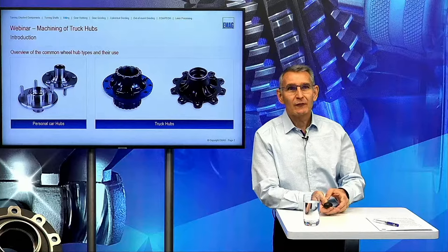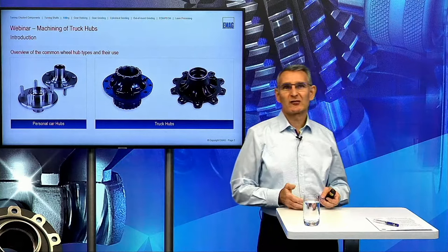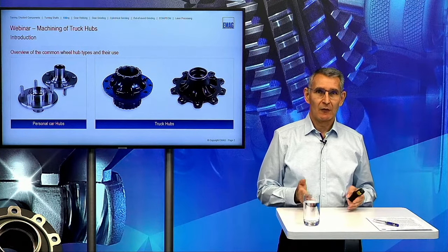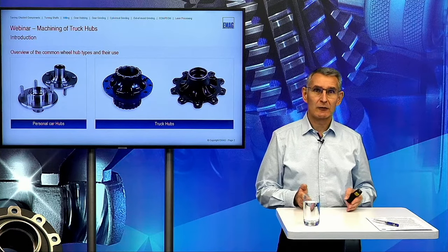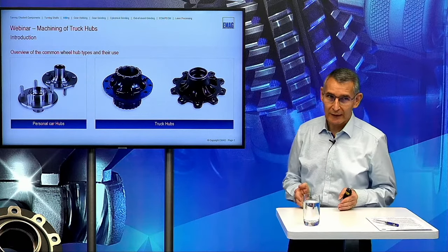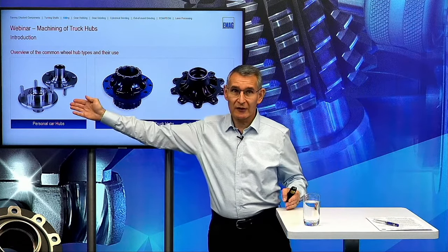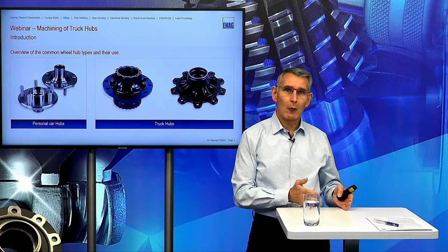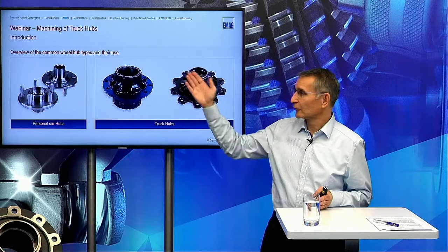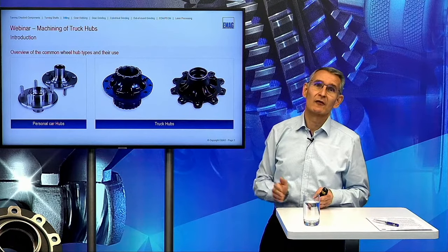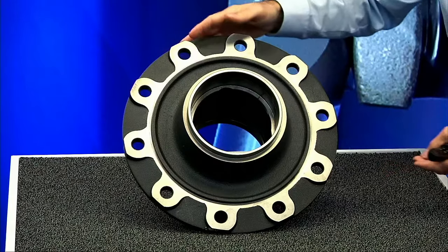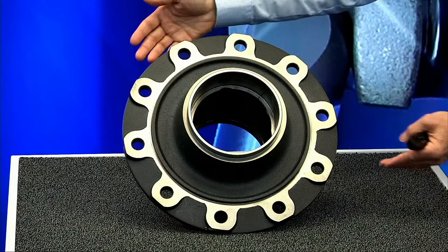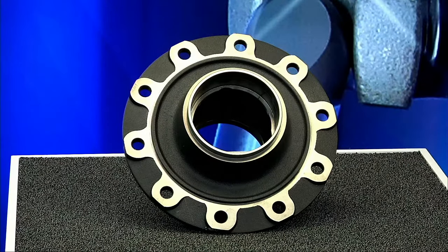Thanks Jan. First of all, I want to give you a short introduction about different types of hubs. We have hubs for personal cars and also hubs for trucks, agricultural use, and so on. Today we don't want to touch personal cars — this is another application. Our webinar today is focused just on the machining and processes for the big hubs, like this typical hub with an OD of 385 mm.